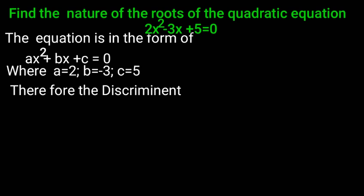Therefore, the discriminant b² - 4ac is equal to b² means (-3)² minus 4 into a means 2, c equal to 5.